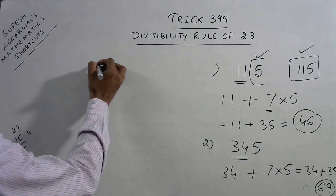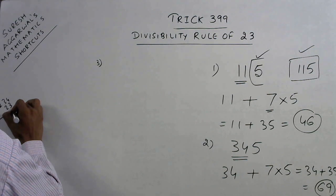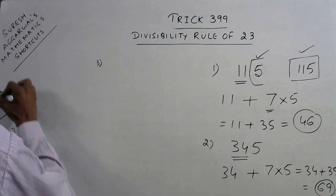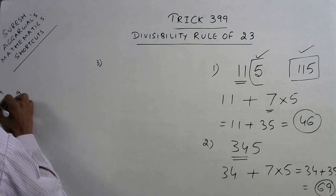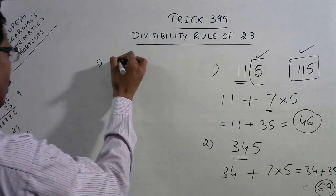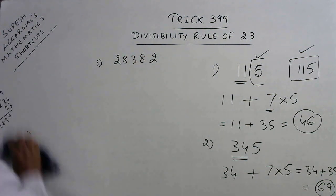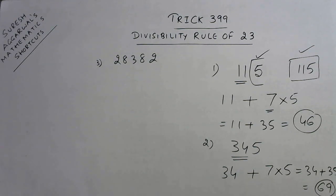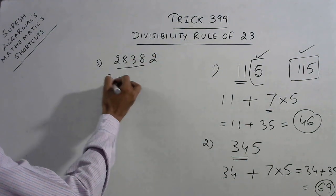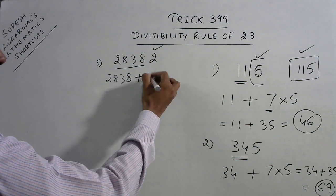Take one more example. This time we have a larger number. I will just frame the question for you. We have 28382. Now we want to identify whether this number is divisible by 23 or not. Again, what we do is we take the remaining number leaving behind the unit place. So you can add 7 times this number, that is 14, 7 into 14.